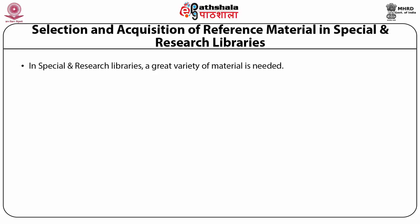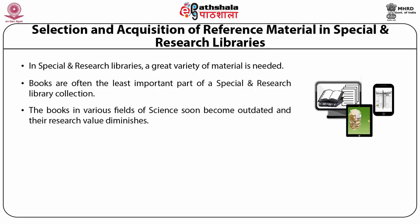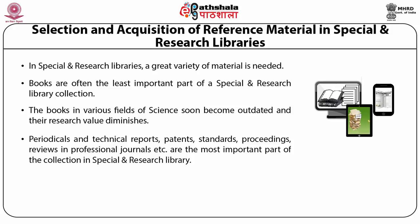In special and research libraries, a great variety of material is needed. Books are often the least important part in such libraries, as books in various fields of science soon become outdated and their research value diminishes. Journals, technical reports, patents, standards, proceedings, reviews in professional journals, etc. are the most important part of the collection in a special and research library.